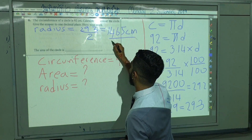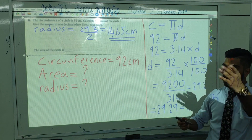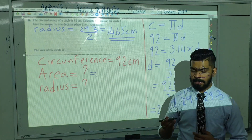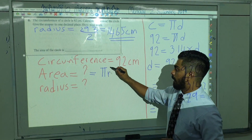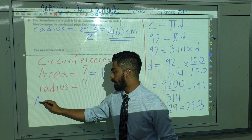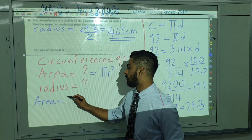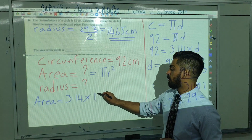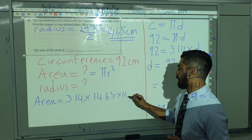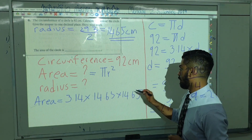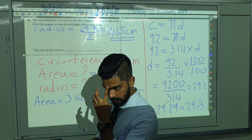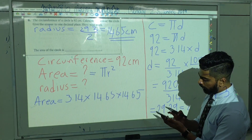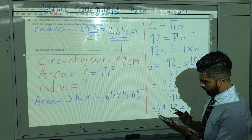Now we know the radius — how can we find the area? What is the formula? π r squared. So the area equals 3.14 times 14.65 times 14.65. Let's multiply this out to get the answer: 3.14 × 14.65 × 14.65.